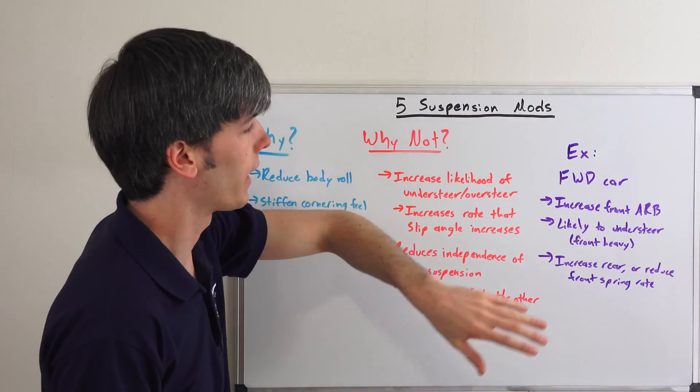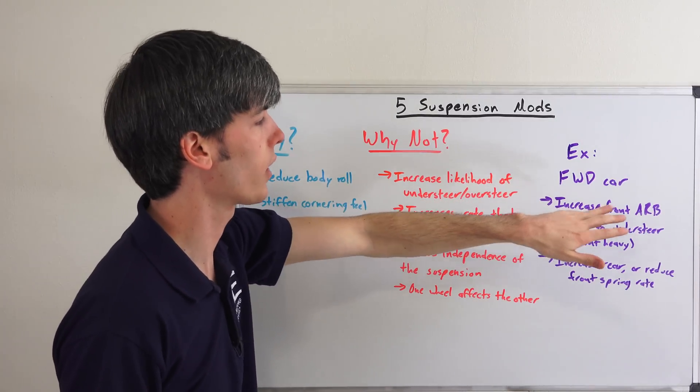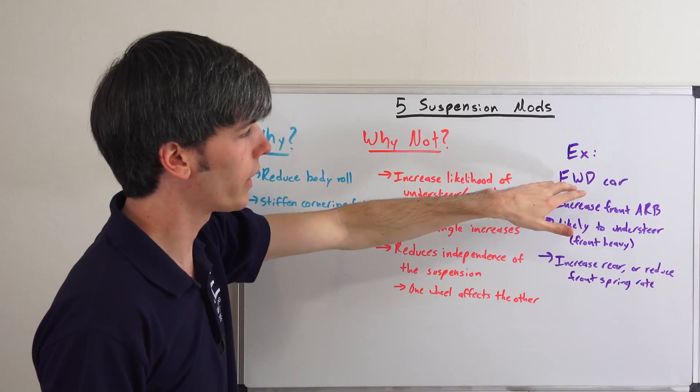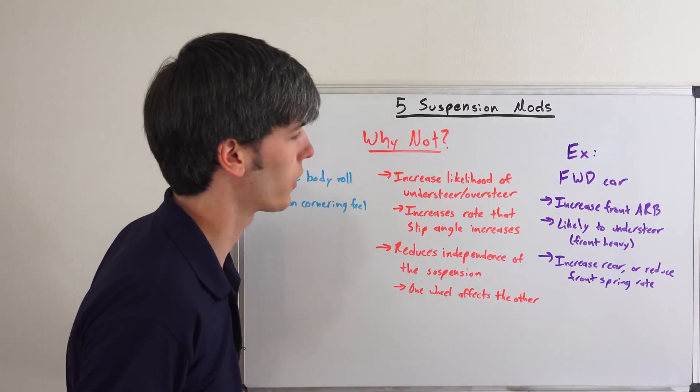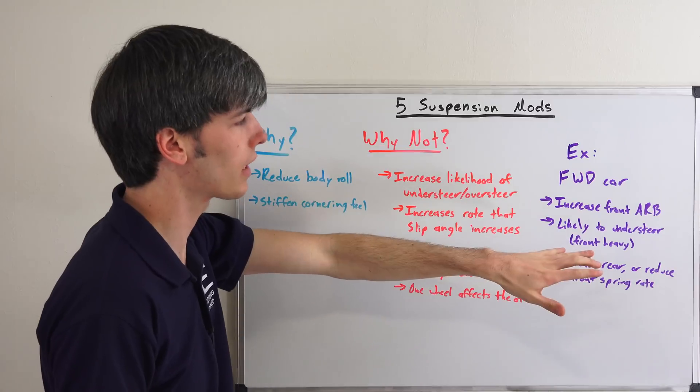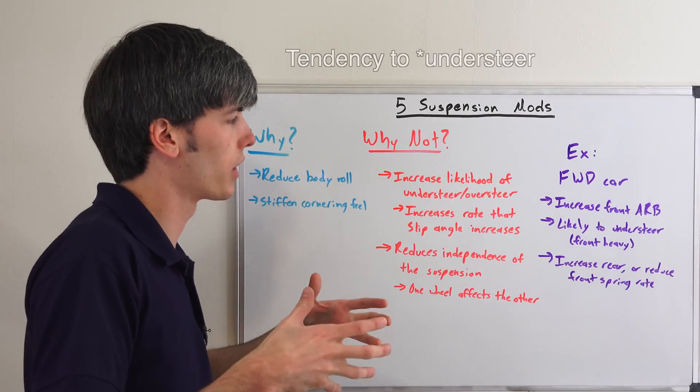Let's say for example you have a front-wheel drive car and you have a lot of body roll. So you stiffen up—you put a larger front anti-roll bar on it. Well, the car already is front-wheel drive and it's front-heavy. Let's say it has a front engine, and so it's already likely to understeer.